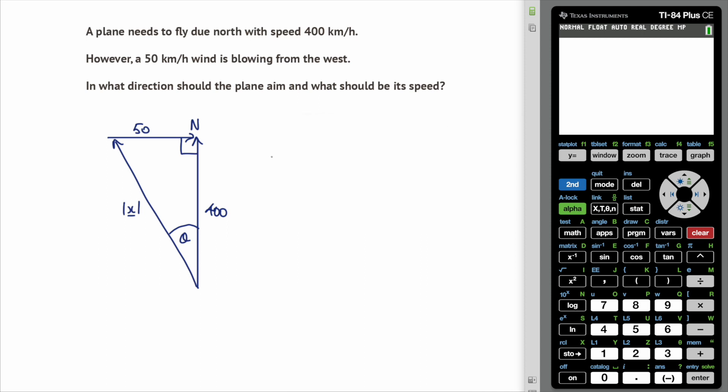So to find this magnitude all we need to do is use Pythagorean theorem. So using Pythagoras it's going to be 50 squared plus 400 squared. Let me pop that into the calculator, so we want the square root of 50 squared plus 400 squared, and that's an approximate value of 403.